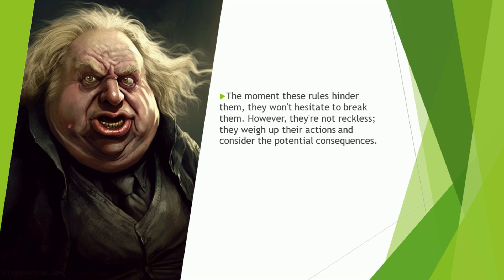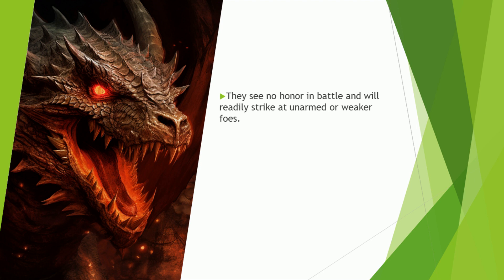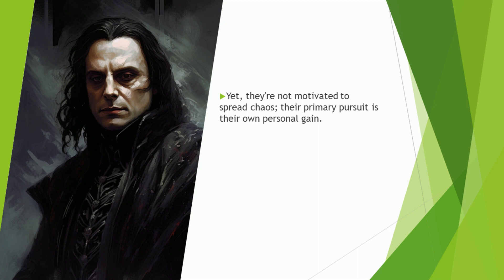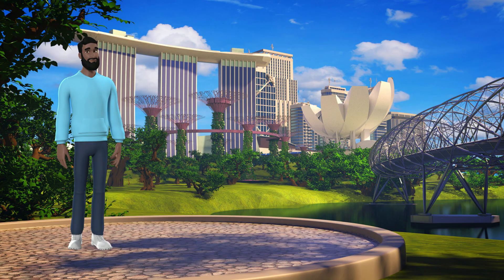However, they're not reckless — they weigh up their actions and consider the potential consequences. Neutral evil characters are ruthless, seeing no wrong in betraying allies when they've outlived their usefulness or harming innocents to further their goals. They see no honor in battle and will readily strike at unarmed or weaker foes. Yet they're not motivated to spread chaos; their primary pursuit is their own personal gain. From their perspective, they're above everyone else, unfettered by concerns for others and free to focus solely on their own ambitions. This freedom, combined with their propensity for ruthlessness, makes them terrifying figures to both allies and enemies.